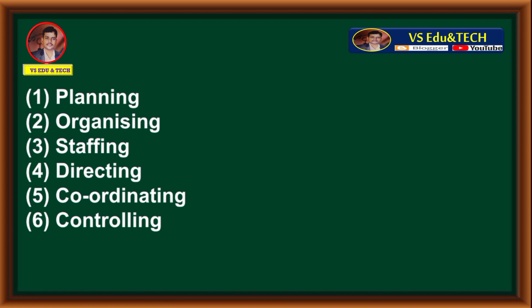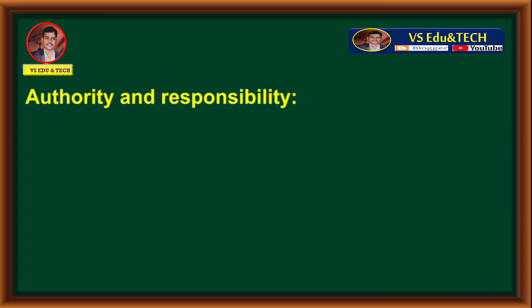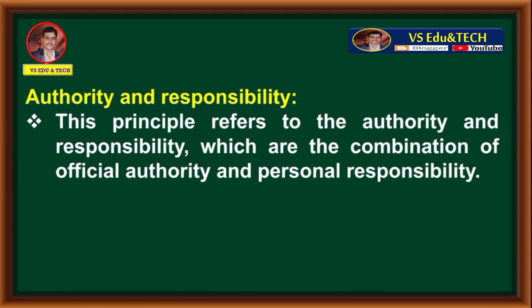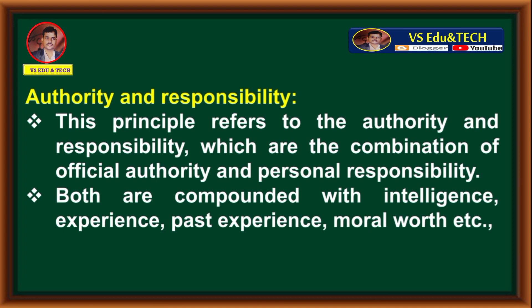Question number 3: Write about authority and responsibility, scalar chain, and centralization in principles of management. Answer: First, authority and responsibility — this principle refers to authority and responsibility, which are the combination of official authority and personal responsibility. Both are compounded with intelligence, experience, past experience, moral worth, etc. Second, scalar chain.